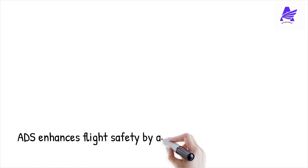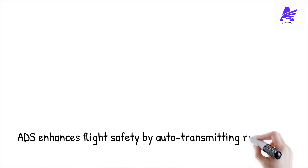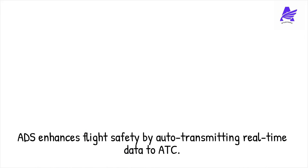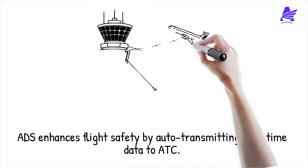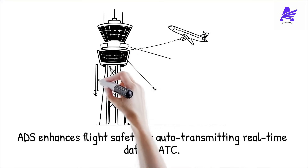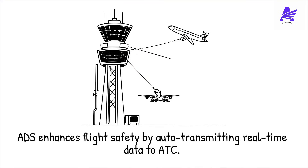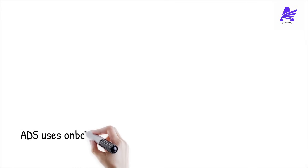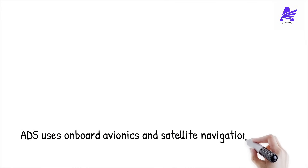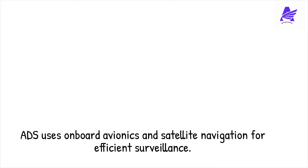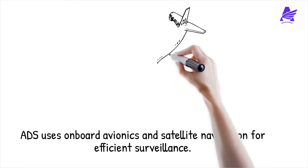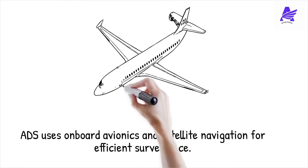Automatic Dependent Surveillance, or ADS, is a modern air traffic surveillance system that enhances flight safety and air traffic management. Unlike traditional radar, ADS allows aircraft to automatically transmit real-time position, speed, and altitude to air traffic control and other aircraft. This system relies on onboard avionics and satellite-based navigation, making it more efficient and accurate than older ground-based surveillance methods.